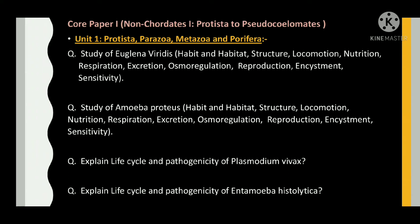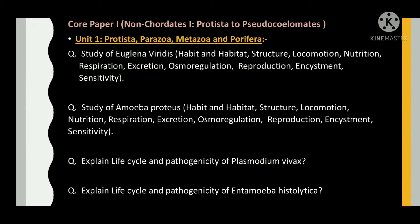Question number one is the study of Euglena viridis — its habitat, structure, locomotion, nutrition, respiration, excretion, osmoregulation, reproduction, and sensitivity. The next question is the study of Amoeba proteus — its habitat, structure, locomotion, nutrition, respiration, excretion, and osmoregulation.